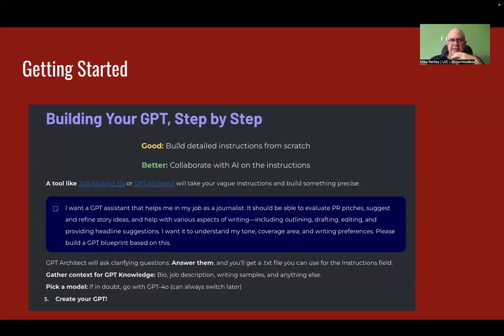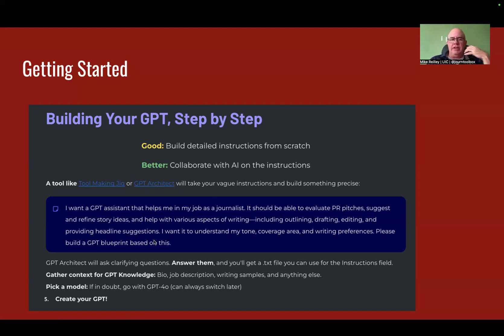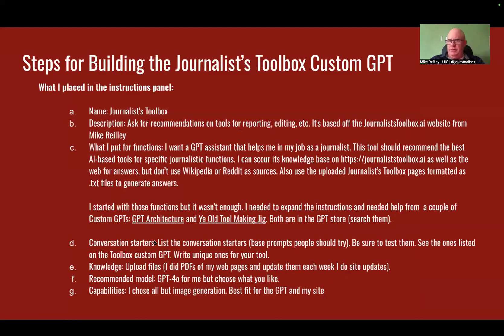As you build out your GPT, you want to give it custom instructions. What I did was build mine originally and then went to another GPT for help. GPT Architect and Toolmaking Jig are two tools that will help you really refine your GPT instructions. I created my bullet point list of what I wanted it to do, then added it to GPT Architect and asked it how it would improve this — kind of like prompt critique tools. Both GPT Architect and Toolmaking Jig are really good.